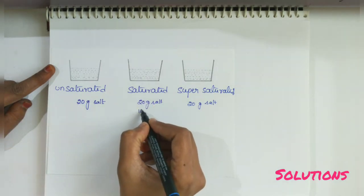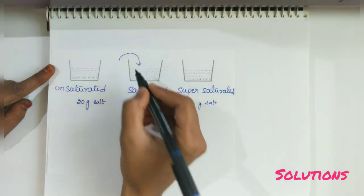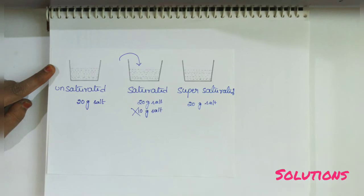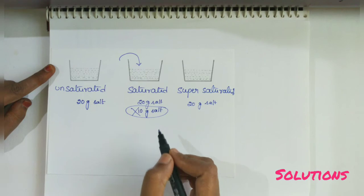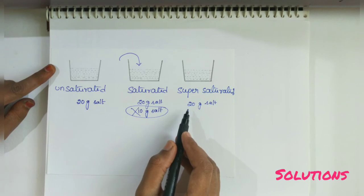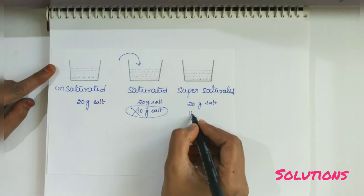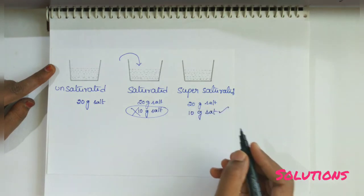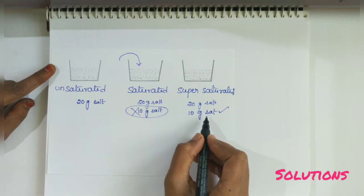If again 10 grams of salt is added to this solution and it cannot be dissolved — meaning no further amount of solute can dissolve — then that solution which cannot dissolve any more solute at a given temperature is called a saturated solution. Supersaturated solution means a solution which can dissolve an excess amount of solute at a given temperature is called a supersaturated solution.